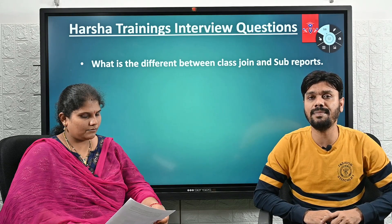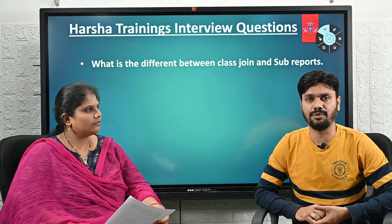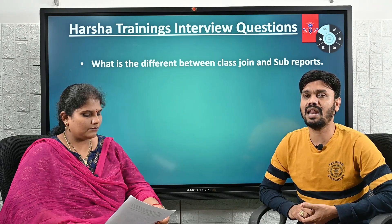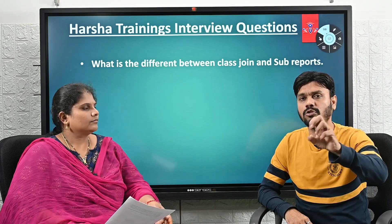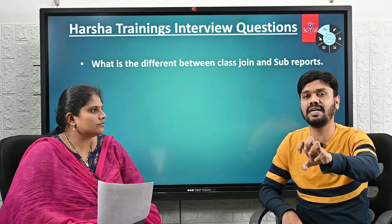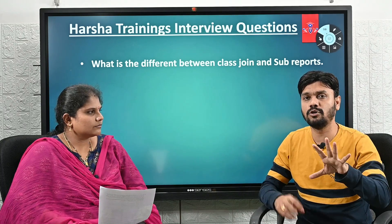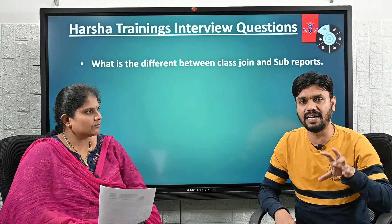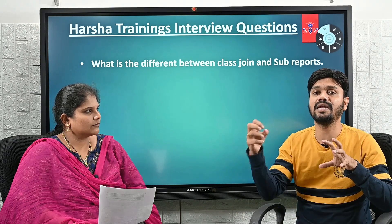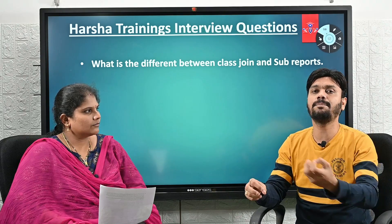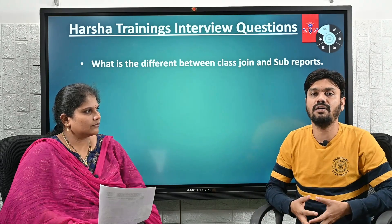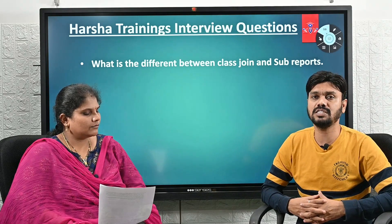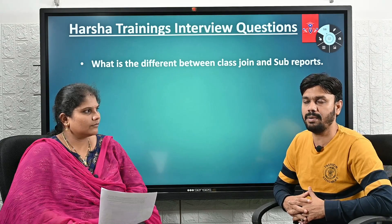So the difference is: in a class join, both tables' data are retrieved at the same time. In sub reports, the child report runs first, its result set is retrieved, and then the main report runs on top of that result set and filters the data further before display. That is the difference between class join and sub report.